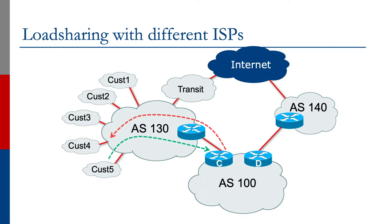If we send our aggregate towards AS130, AS130's customers will see that aggregate. So traffic from AS130's customers to AS100 will follow the green arrow into AS100. If incoming traffic goes that way, we would want outgoing traffic to follow the return path. We don't really want to go through router D, through AS140, through the whole worldwide internet, through the transit provider of AS130, back to AS130's customers. That's a long way around.